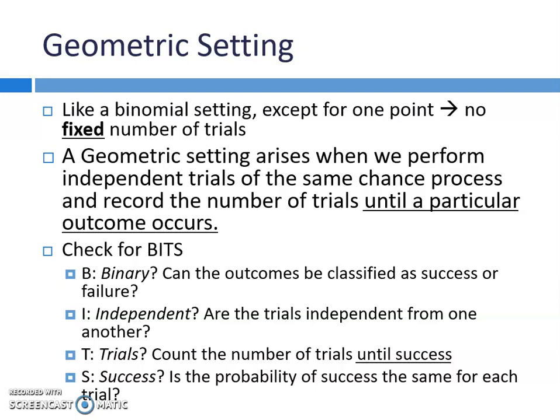In binomial, we're saying if I did this thing 12 times, what's the chance I had this many successes? In a geometric setting, it arises when we perform independent trials of the same chance process. But now we're recording the number of trials until we see a particular outcome — until we get a success. Because there are a lot of things in life where once you have success, you probably don't want to keep going.